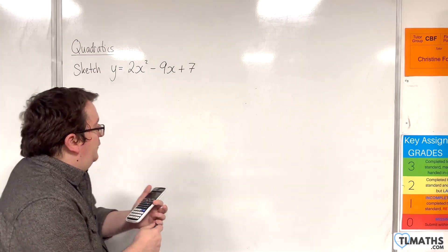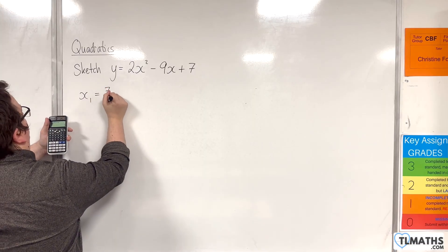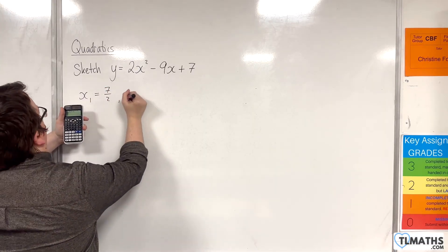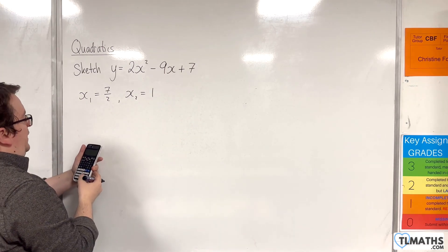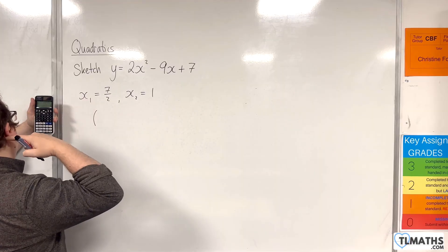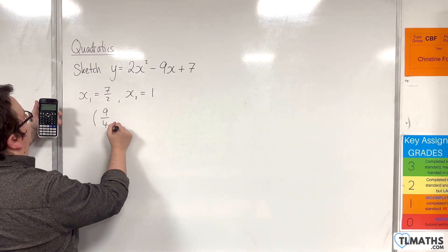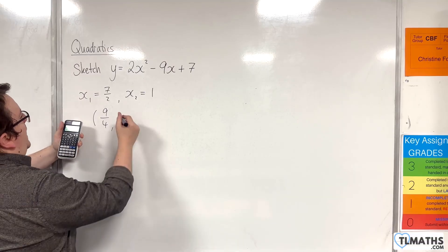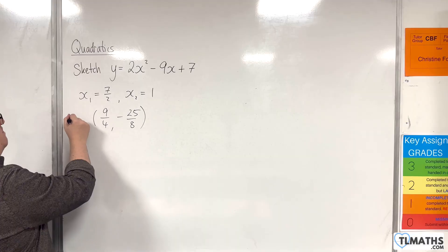And the first thing that the calculator tells me is x1 equals 7 halves. I'll press equals again and I get x2 is equal to 1. I'm going to press equals again. And it tells me now the minimum of y equals x squared plus bx plus c. So the x value is 9 quarters and equals again minus 25 eighths. So this is a minimum point.